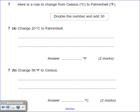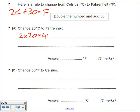Converting Celsius to Fahrenheit — let's turn this into a formula. I've got Celsius C. Double it: that's 2C. Then add 30. That equals Fahrenheit F. So F equals 2C plus 30. For the first part, swap C for 20: 2 times 20 is 40, plus 30 equals 70. None of you struggled with that because you just did what it said in the box.